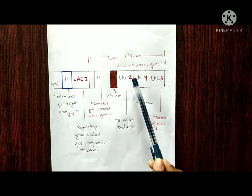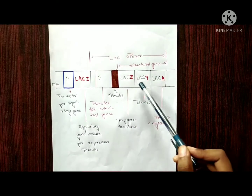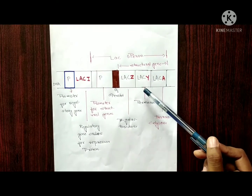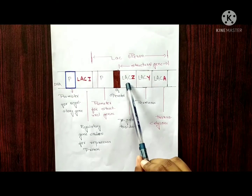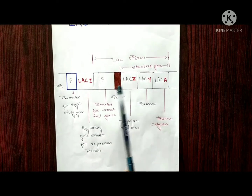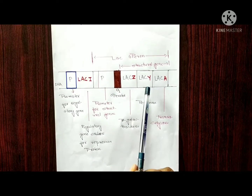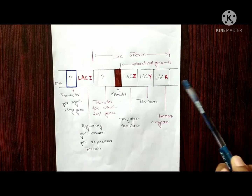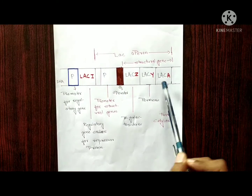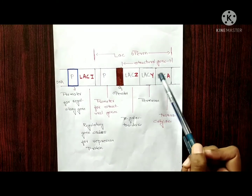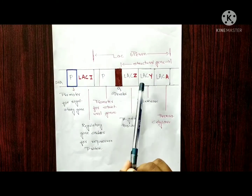The lac operon is seen in prokaryotes. It is not seen in eukaryotes because in eukaryotes each gene has its own promoter and they don't have cooperative work. That's why the operon is not seen in eukaryotes.